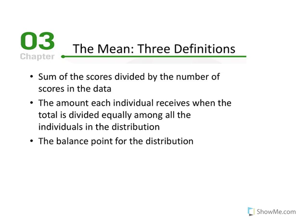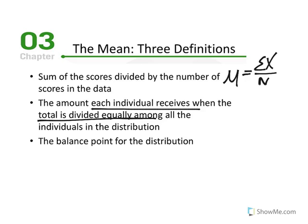The mean can be thought of in three ways. First, it is the mathematical center: μ = sum of X over N. Second, it is the amount each individual receives when the total is divided equally among all individuals. For example, if I have 30 students and 60 cookies total, that sum of X equals 60, N = 30, and each student receives 60 ÷ 30 = 2 cookies — that's equal distribution, which is the same as the average of that distribution.